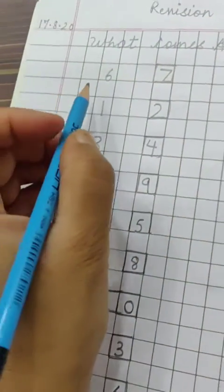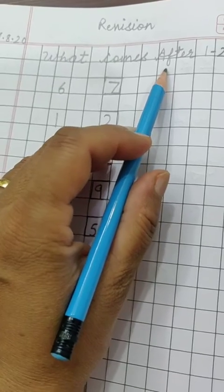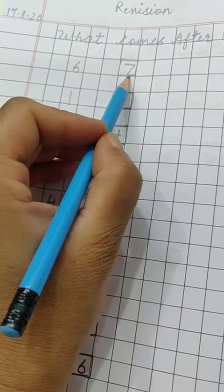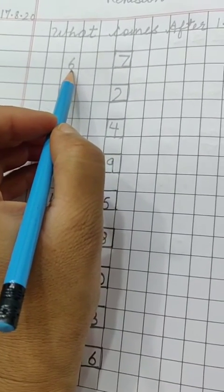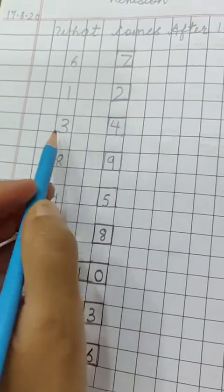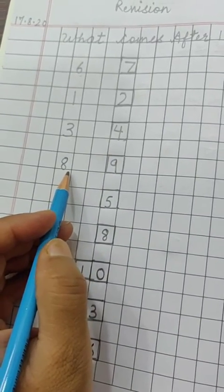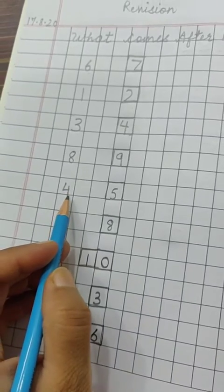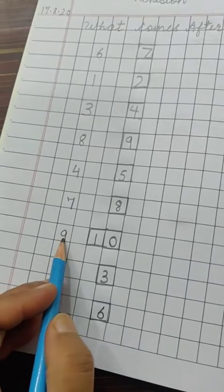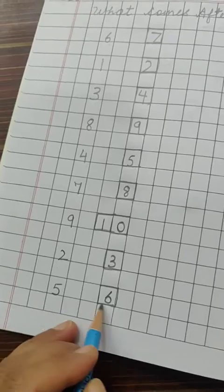Again, we will revise this page. What comes after? What comes after? Okay, 7 I have written here. What will you write in the box? 1, 2, 3, 4, 8. What comes after? 9. What comes after? 5, 7, 8, 9, 10, 2, 3, 5, 6.